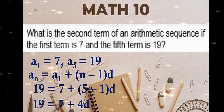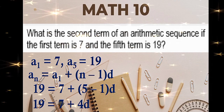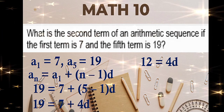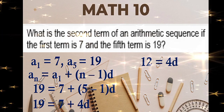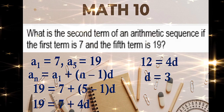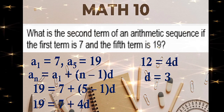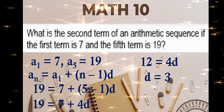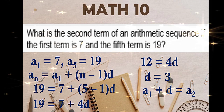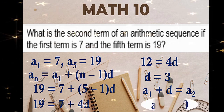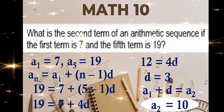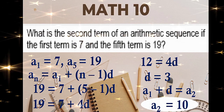Simplify: 5 minus 1 is 4. Transpose 7 to the left side: 19 minus 7 is 12. In order to get the value of d, we will divide both sides by 4. That is d is equal to 3. The difference is 3. So to get the second term, just add the first term and the common difference. First term is 7, plus the difference which is 3, will give us the second term of 10.